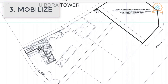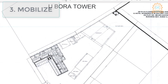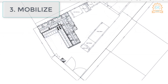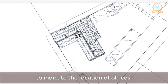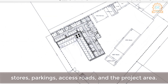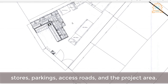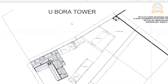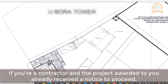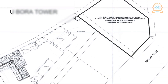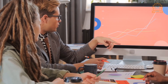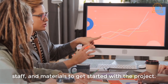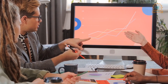Step 3: Mobilize. Before mobilizing, you should prepare a mobilization layout plan to indicate the location of offices, stores, parkings, access roads, and the project area. If you're a contractor and the project awarded to you has already received a notice to proceed, then this is the appropriate time to mobilize your equipment, staff, and materials to get started with the project.